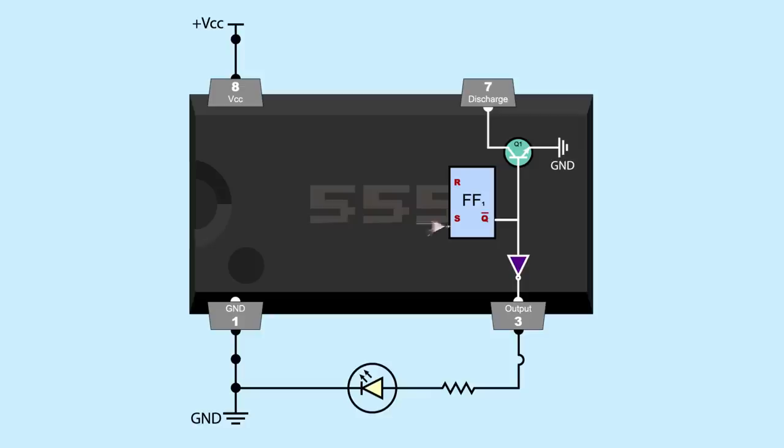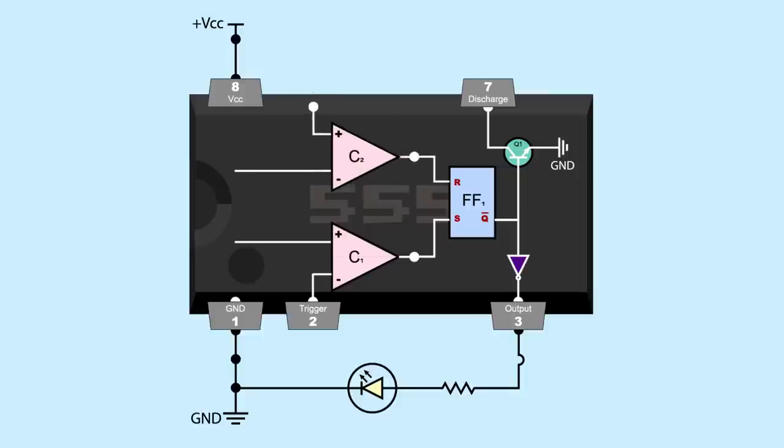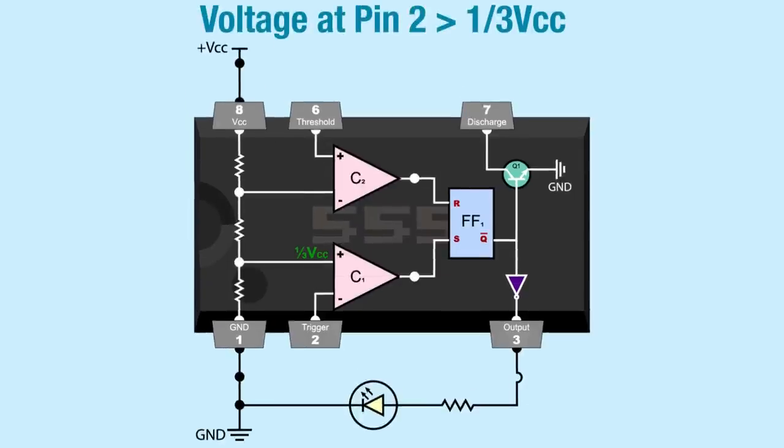Set connects to the output of a comparator that connects to pin 2, trigger. Reset connects to the output of another comparator that connects to pin 6, threshold. Both comparators connect to a voltage divider that runs between ground and VCC internally. The positive input of comparator 1 is supplied a voltage of 1/3 VCC. When the voltage at pin 2 is higher than 1/3 VCC, comparator 1 outputs low. But if the voltage at pin 2 drops below 1/3 VCC, comparator 1 outputs high, which sets the flip-flop, and the 555 outputs high.